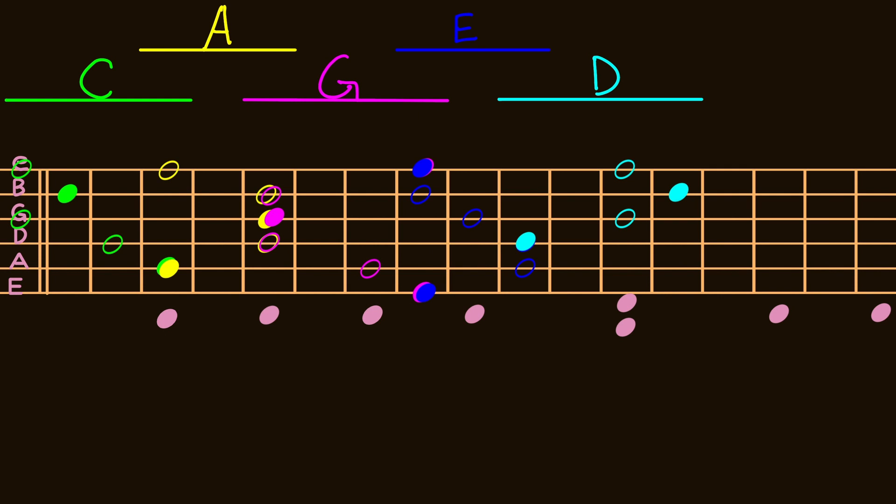These are the C, A, G, E, and D chord shapes, all played on a C root.